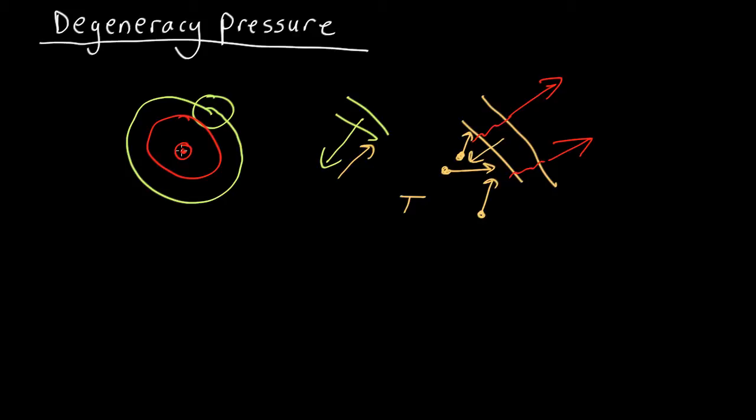What we need is something that stops these moving particles from slowing down below a certain speed, kind of like a minimum possible speed. And that's what quantum mechanics, in the form of degeneracy pressure, gives us.